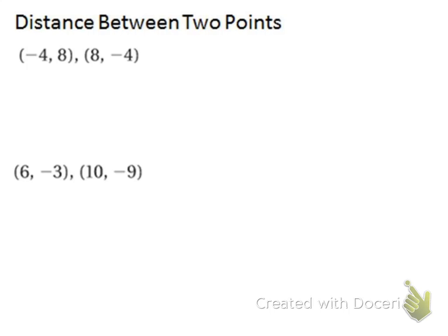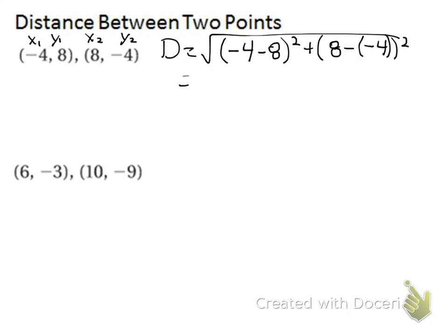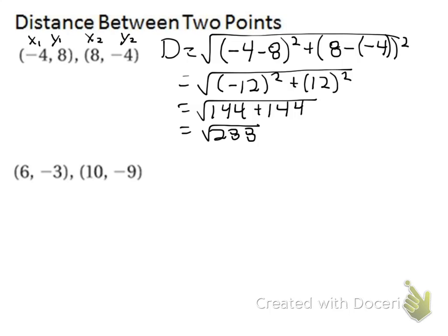Before we get to that, a couple examples for distance formula. You can always label them x1, y1, x2, y2. Our distance in this case is going to be the square root of negative 4 minus 8 squared plus 8 minus negative 4 squared. To simplify within the radical, we get negative 12 squared plus 12 squared becomes 144 plus 144, which is the square root of 288. We can factor 288. That is 2 times 144, which is 12 times 12. We have a pair of 12s. Those come out. It's 12 root 2.